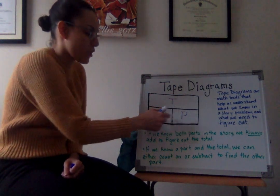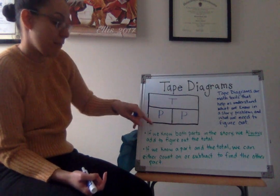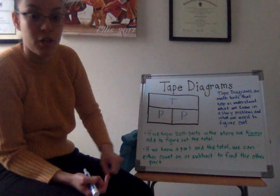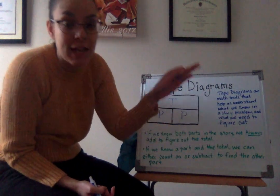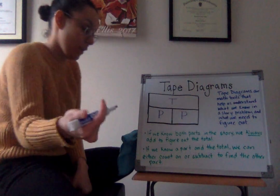So if we have our two parts, the tape diagram helps us to figure out that if we have both of our parts in our story, we always add to figure out the total.